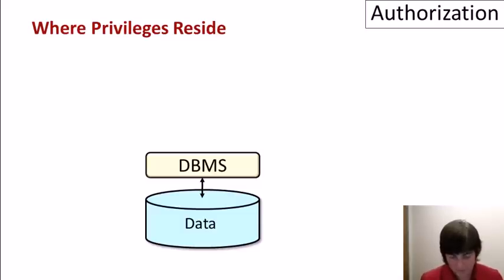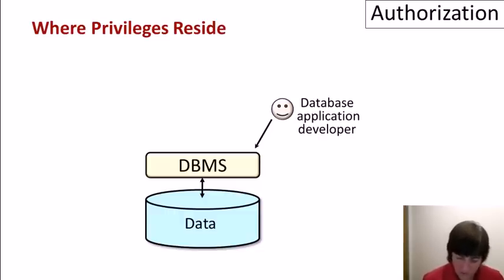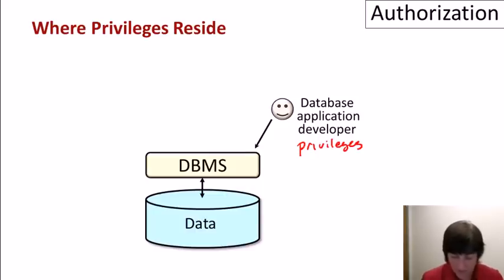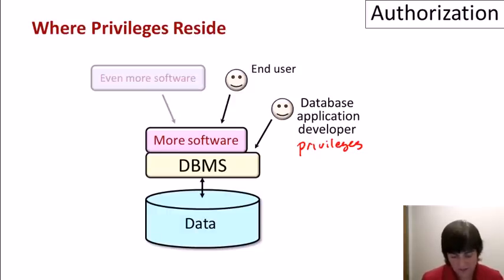Lastly, let me talk a little bit about where privileges actually reside in reality. We have our data being managed by a database system, and typically we'll have application developers who are working directly with the database system, often developing modules that will be invoked by end users. Those application developers have to have privileges on the database to create the modules. But end users typically don't have privileges themselves — they might have separate privileges to access the modules, but they're not going to be using the privilege system of the database system.